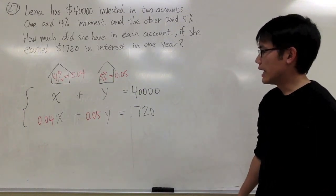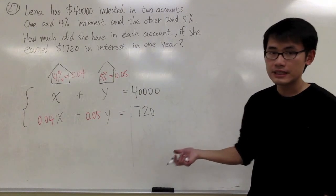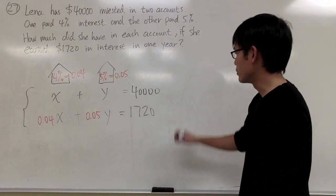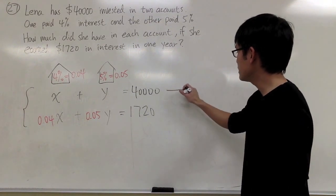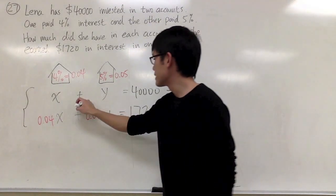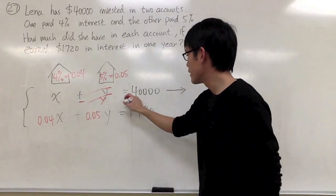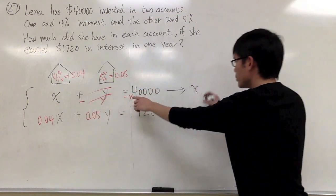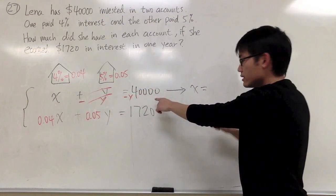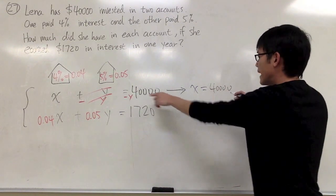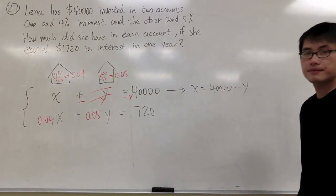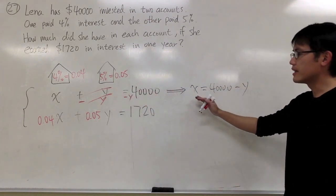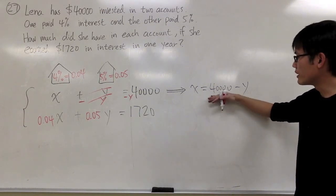And in terms of solving for this, I think I'll just do it by substitution. Of course, we can just do it by elimination, doesn't matter how you like to do it. I will just take this, let me minus y on both sides so I can get rid of the y. So I get x is equal to 40,000 minus y. So from the first equation, I can get x is equal to 40,000 minus y.